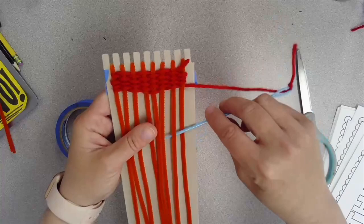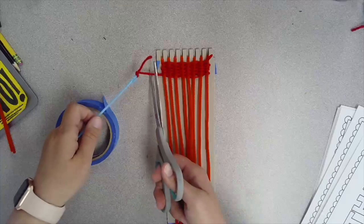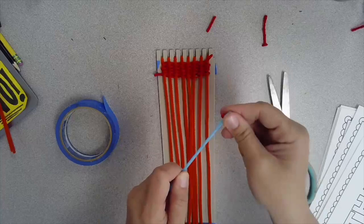When you start to run out of string, your string will look really short. Cut off so there's a little tail left. Cut the knot off of the needle. Throw away that extra string. You don't need it.